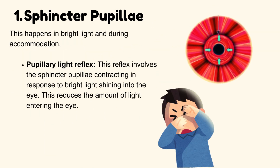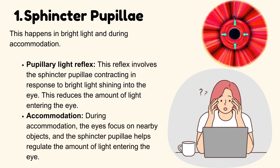Pupillary light reflex: this reflex involves the sphincter pupillae contracting in response to bright light shining into the eye, which reduces the amount of light entering the eye. Accommodation: during accommodation, the eyes focus on nearby objects, and the sphincter pupillae helps regulate the amount of light entering the eye.